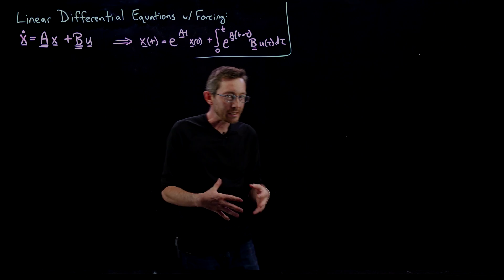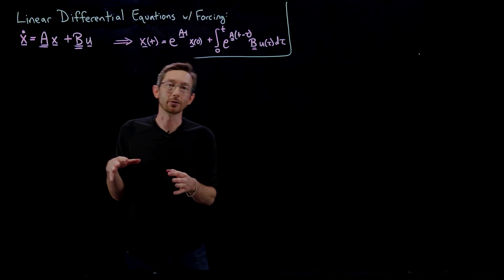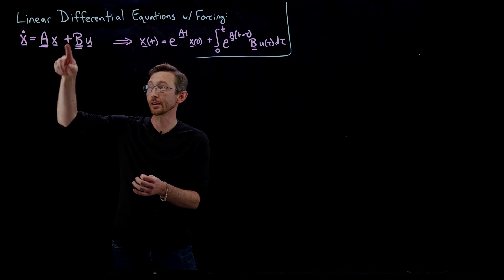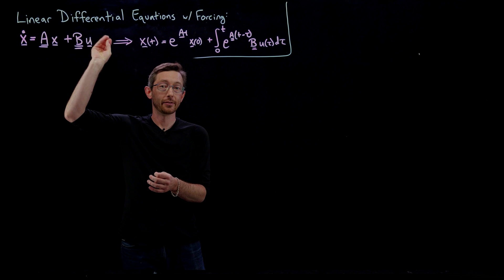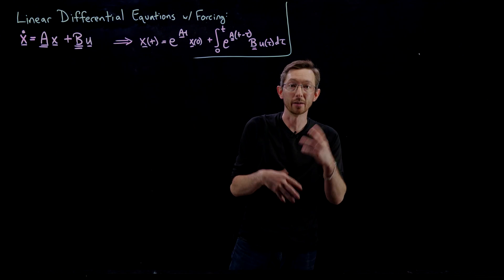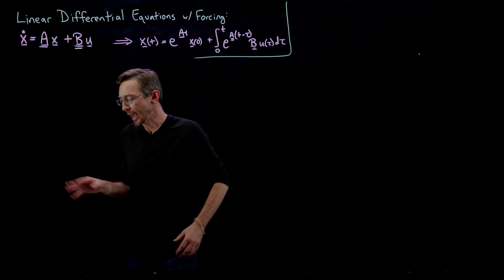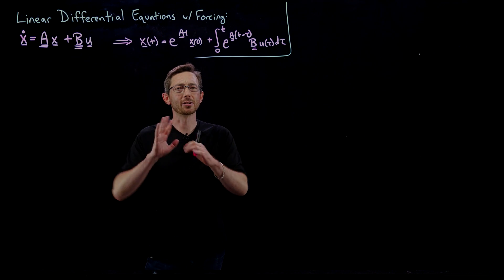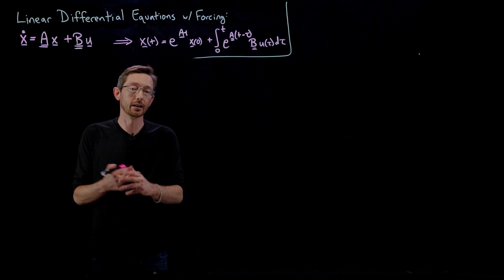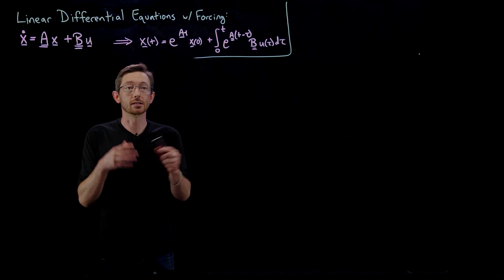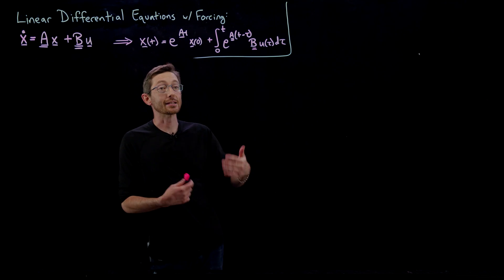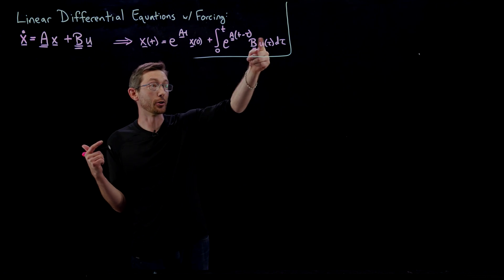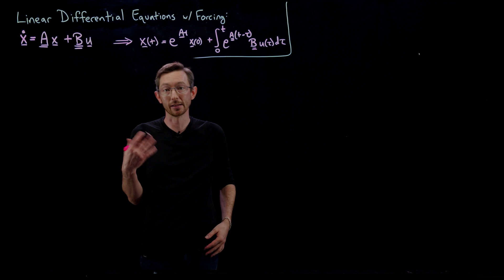Welcome back. In the last few lectures I showed you how to solve systems of differential equations with forcing — not just x-dot equals Ax, but with a plus Bu term where u is some control or forcing variable. Today I'm going to show you how to simulate these systems in Python and in MATLAB. There are a ton of really powerful tools built into both languages to work with these kinds of control systems.